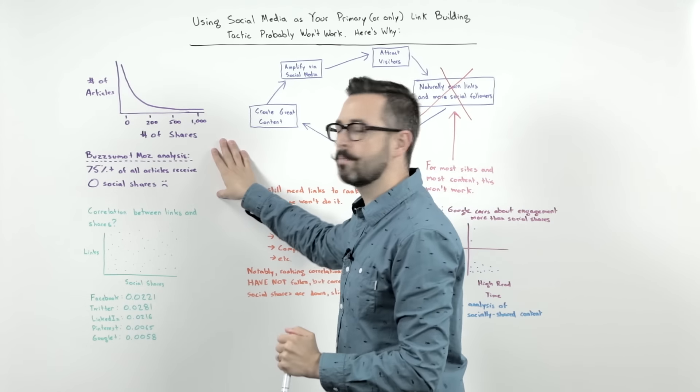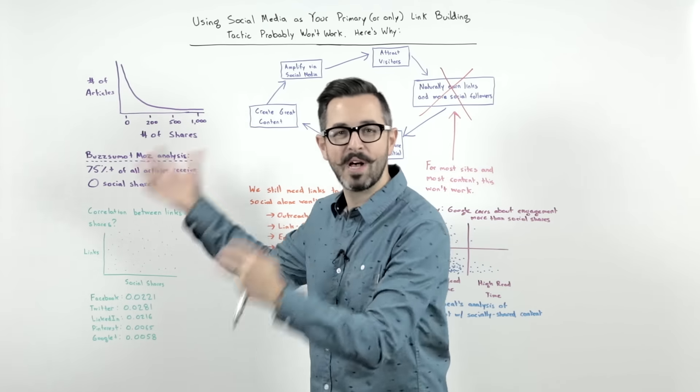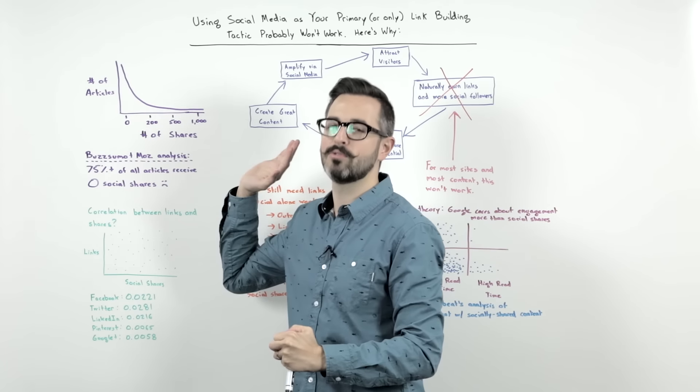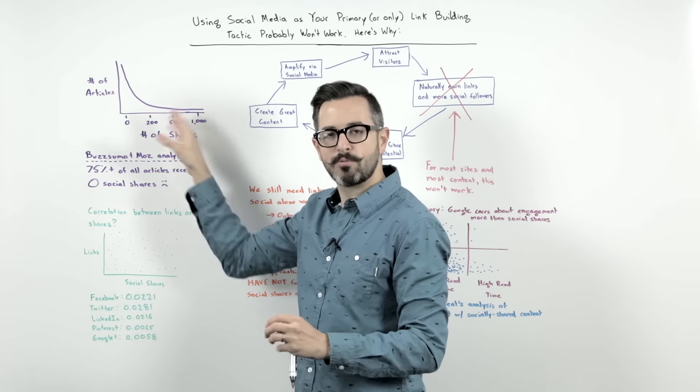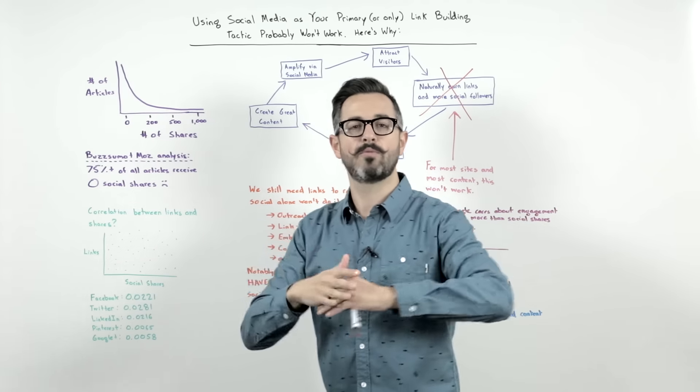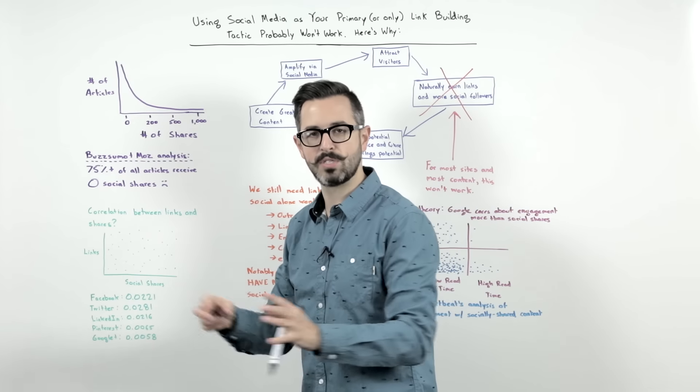So first off, BuzzSumo, they did the vast majority of the work. I appreciate them including Moz as well, and we did participate in some of our linked metrics, but the BuzzSumo crew did a bunch of this work. So they looked at articles that received social shares, right? In fact, a million articles that were taken from their database. And then they looked at the number of shares and number of links those received.